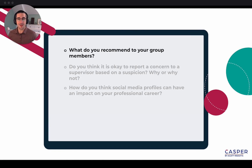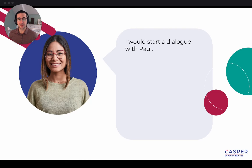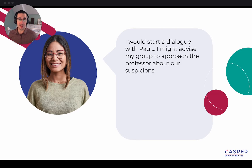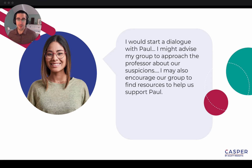On the next page, Lucy is given a series of questions about the scenario, and she begins to type out her response. For the first question, she writes: 'I would start a dialogue with Paul on social media to see what's going on. Depending on that conversation, I might advise the group to approach the professor about our suspicions. I may also encourage our group to find resources to help support us and Paul.'